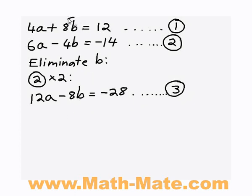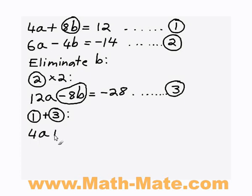So I have an 8b in equation 1, and I have a negative 8b in equation 3. So if I add these two equations together, I'm going to be able to eliminate b. So I'm going to add equation 1 and 3 together, and I get 4a plus 12a, and I get 8b from the first equation, and a minus 8b from equation 3. And then adding up the other side of the equation, I get 12 minus 28.